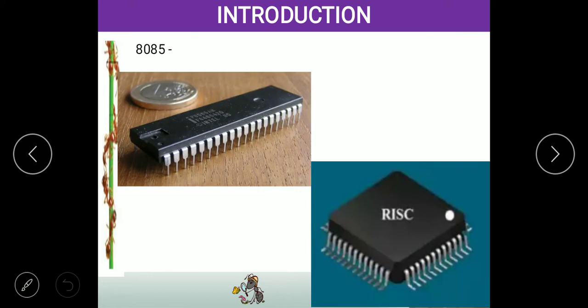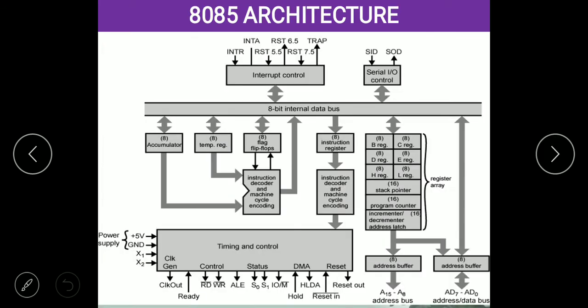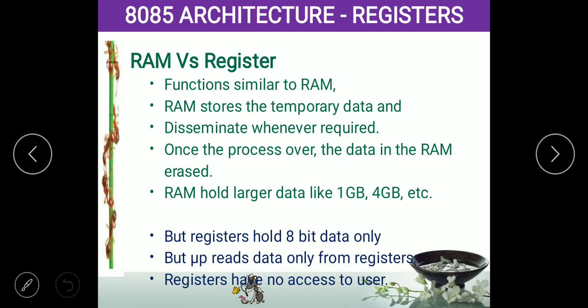This is the architecture of the 8085 microprocessor. This segment is called the register — B register, C register, D register, E register, H and L register. This is what we discussed in the previous session. Now we are going to discuss the remaining registers like the accumulator. A register is nothing but a memory element that stores data temporarily. It is similar to RAM — structurally and functionally both are the same.